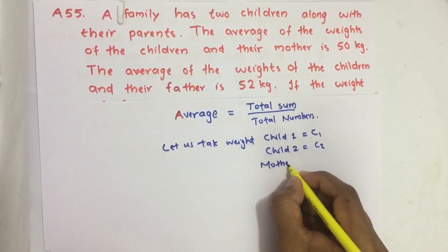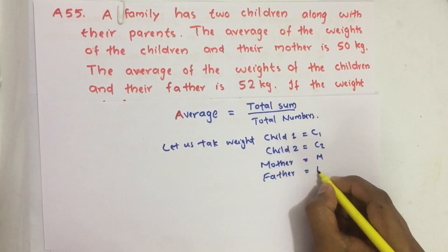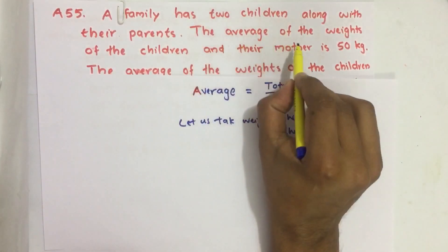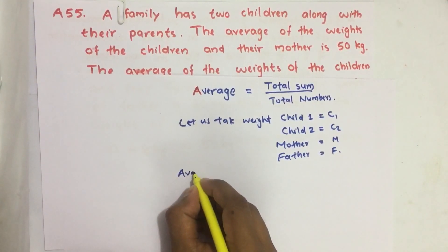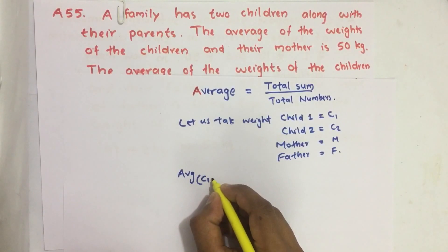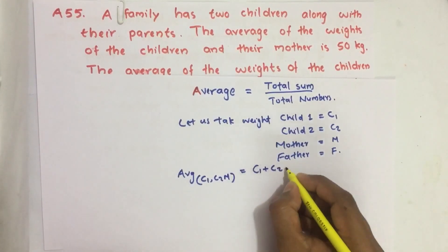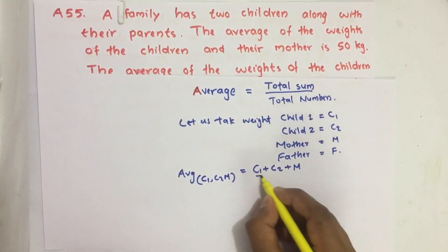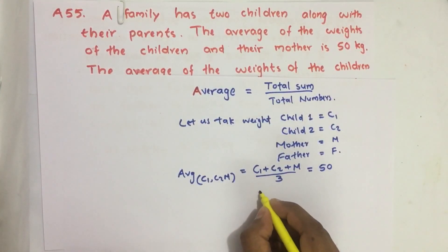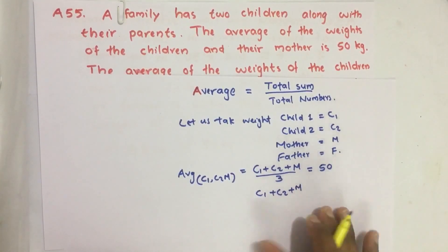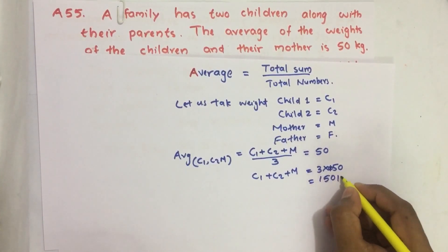Mother's weight as M and father's weight as F. From the first statement, the average of the weights of the children and their mother is 50 kilogram. Average of C1, C2, and mother: total weight C1 plus C2 plus M divided by 3 equals 50 kilogram. From here, C1 plus C2 plus M equals 3 into 50, which is 150 kilogram.